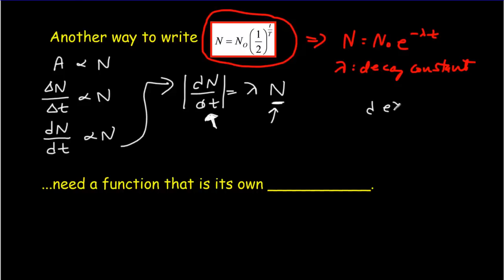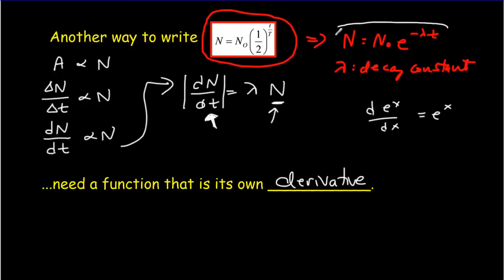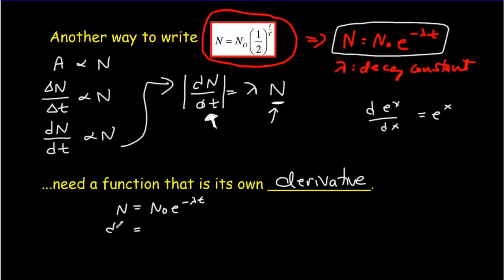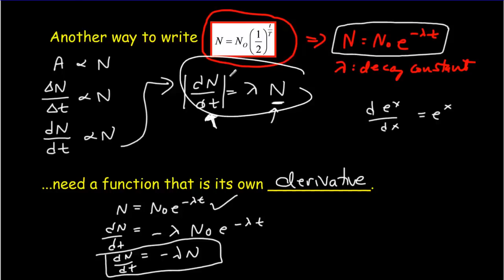The derivative of e to the x with respect to x is e to the x. So we need a function that is its own derivative. If I take N equals N₀ e to the negative lambda t and take the derivative of both sides, I get dN/dt equals negative lambda N₀ e to the negative lambda t, which is negative lambda N. So this equation satisfies the differential equation.